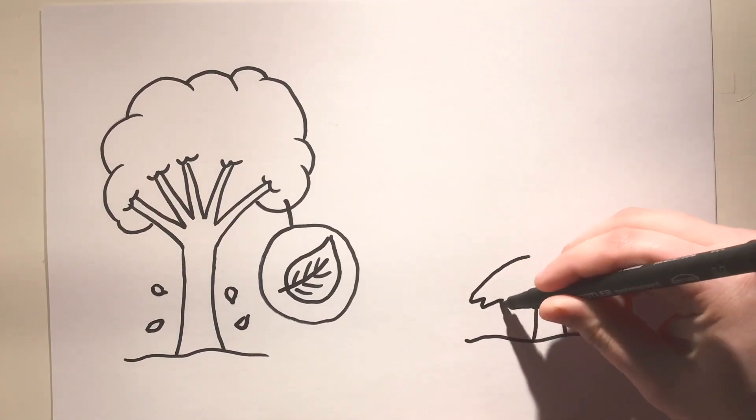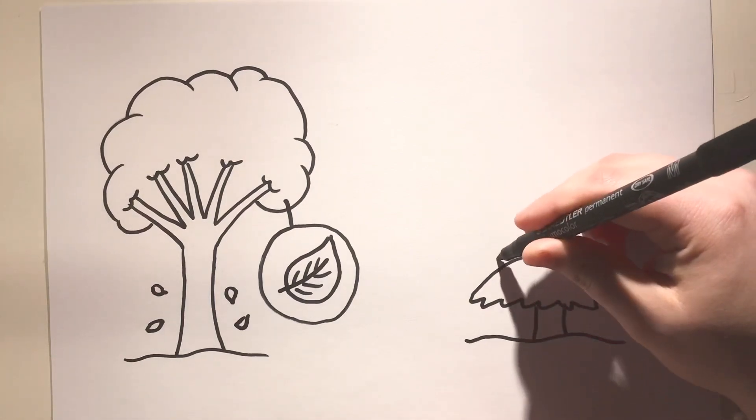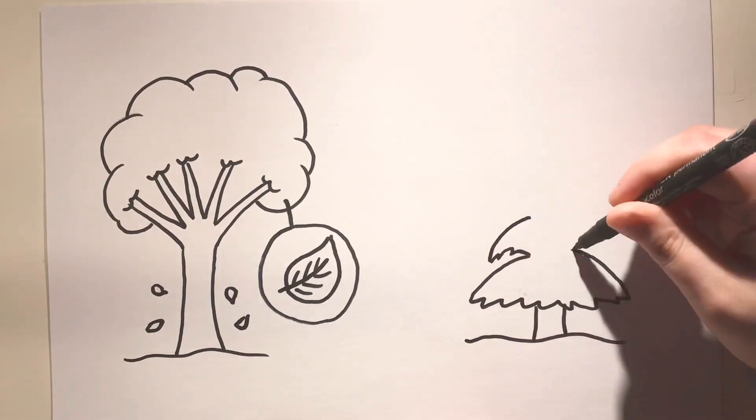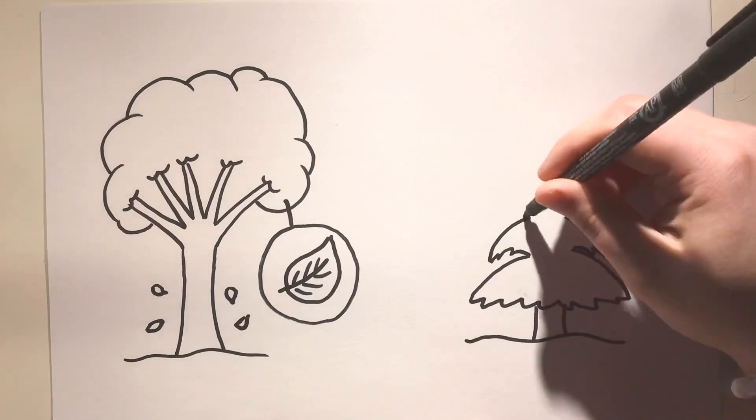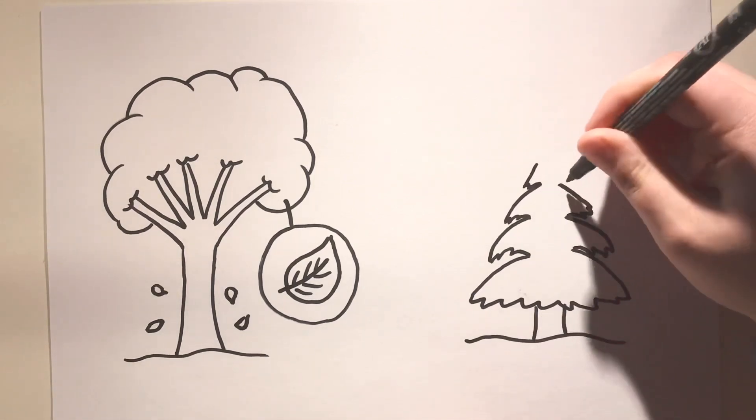There's also another type of tree, which is the conifer. Conifers have slightly different types of leaves. They are called needles. They're really thin and spiky. You might have seen some perhaps on a Christmas tree.